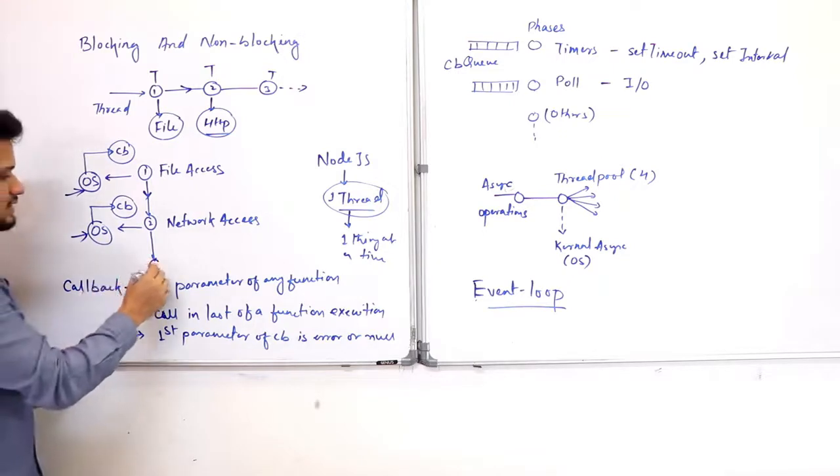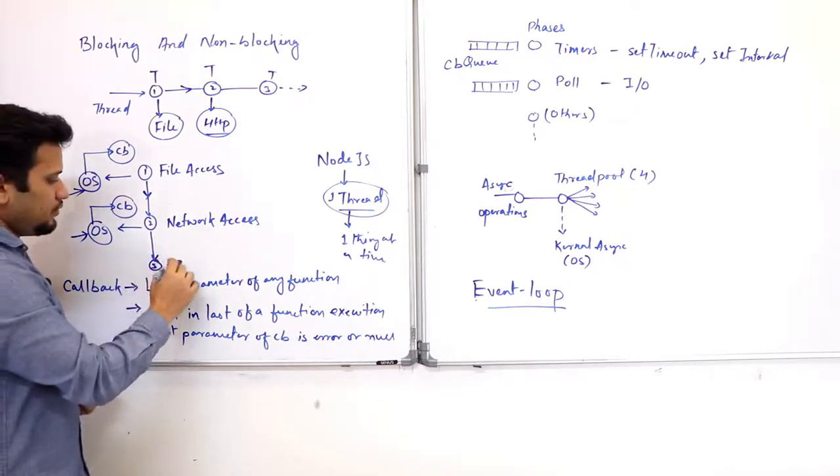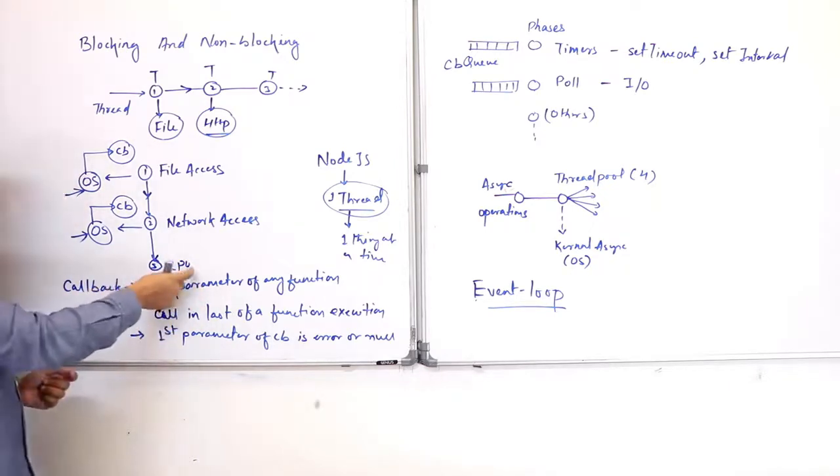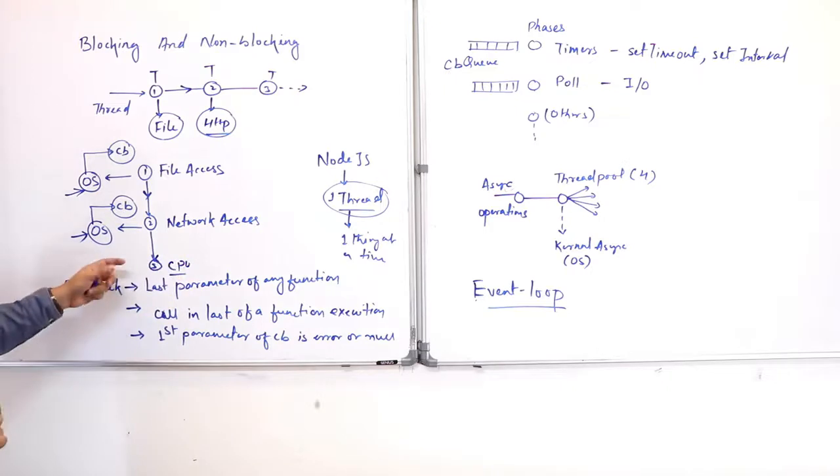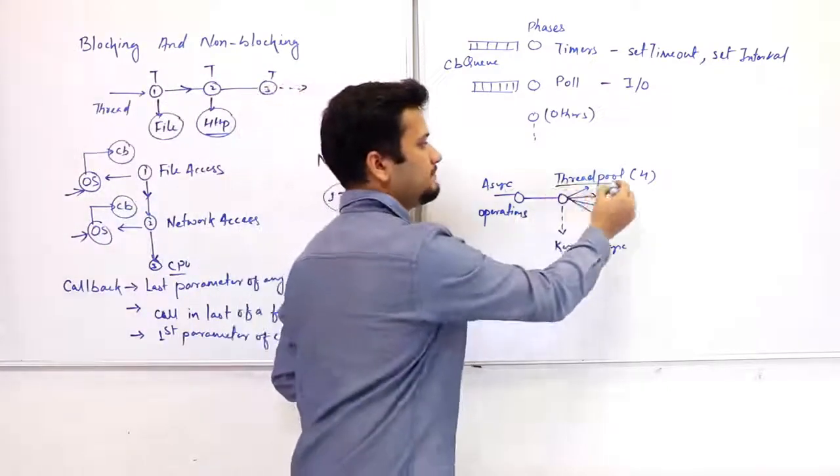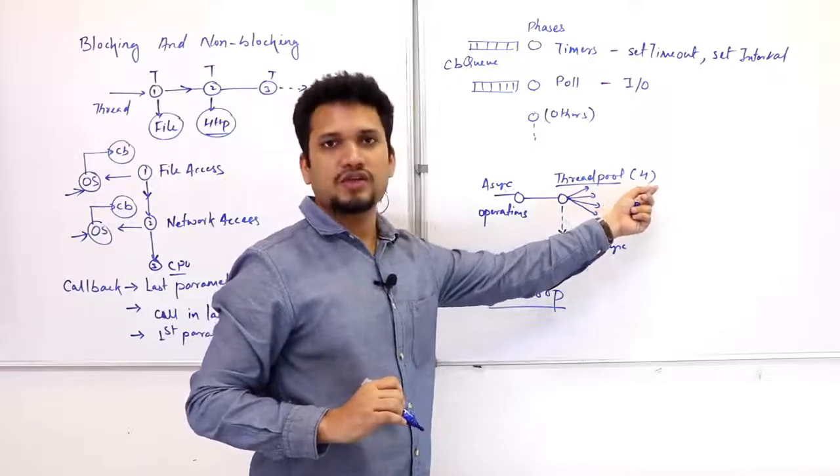Now you can ask, suppose there is a task 3 and this is a CPU-intensive calculation, for example, and it takes a long time to complete. We cannot provide this task to the OS because OS does not have any handling of this operation. So actually what we have in the node is the thread pool. Thread pool, when you create by default, has got 4 threads.